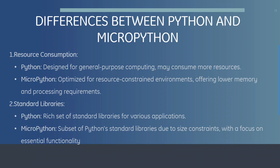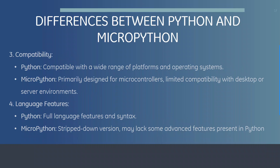What are the differences between Python and MicroPython? First, resource consumption: Python is designed for general-purpose computing and may consume more resources, whereas MicroPython is optimized for resource-constrained environments offering lower memory and processing requirements. Second, standard libraries: Python has a rich set of standard libraries, whereas MicroPython uses a subset of Python's standard library focused on essential functionality. Third, compatibility: Python supports a wide range of platforms and operating systems, whereas MicroPython is primarily designed for microcontrollers with limited compatibility with desktop and server environments. Fourth, language features: Python has full language features and syntax, while MicroPython is a stripped-down version that may lack some advanced features.